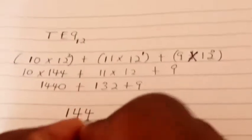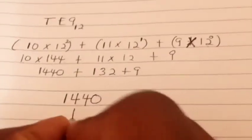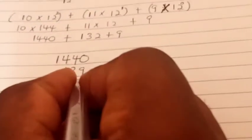Vertically like this: 1440 plus 132 plus 9.